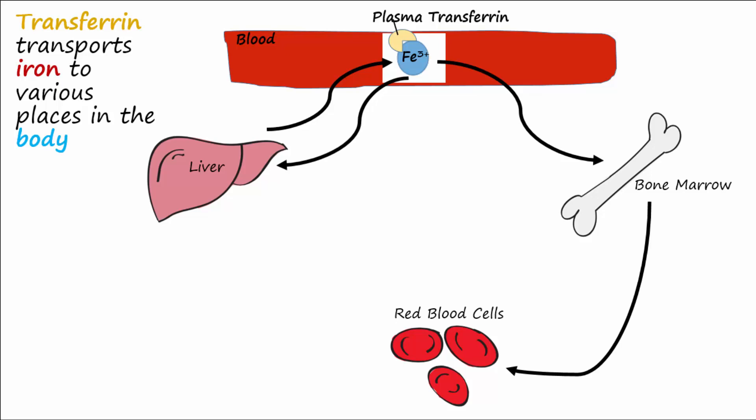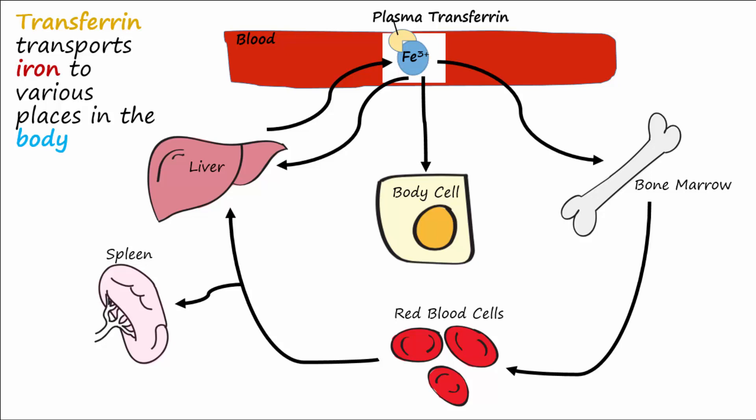Iron is high in the reticuloendothelial cells of the liver and spleen because these organs break down senescent erythrocytes and take on leftover iron from this process. Iron is also transported to body cells to be used to make myoglobin and iron-containing cytochromes in the mitochondria.